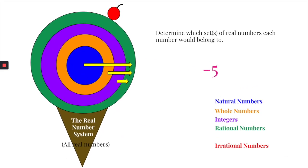Sometimes you'll have questions asking you to determine which set or sets of real numbers a number belongs to. Let's look at negative five. Negative five is a negative whole number, which means it's going to be an integer. Since it's an integer, it's automatically rational. If a number is rational, it's automatically not irrational — always one or the other, never both. And since integer is the smallest category it falls in, it's not natural and not a whole number.